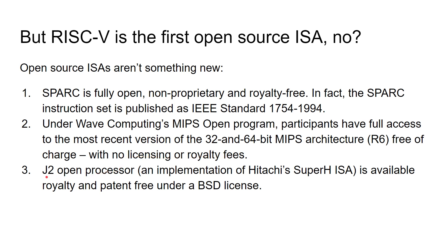And then there's an interesting one: I found J2, which is an implementation of Hitachi's SuperH ISA. This processor, J2, is an open processor which is royalty-free and patent-free under the BSD license. So there are lots of alternatives to RISC-V if people wanted something purely because it was an open source instruction set architecture.